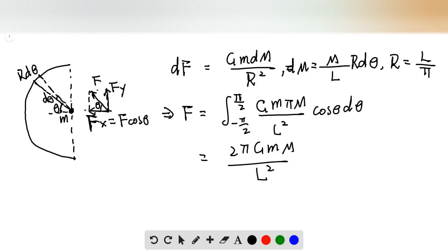Okay, so the total arc length of this semicircle is L, right? So the angle from here to here is pi. So the radius of this semicircle is R equals L divided by pi.